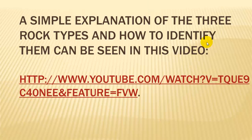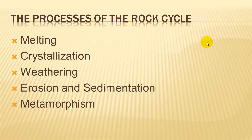For more information on how to identify specific rocks, go to this YouTube video. There are several processes that work on earth to turn one type of rock into another. The key processes are melting, crystallization, weathering, erosion and sedimentation, and metamorphism.